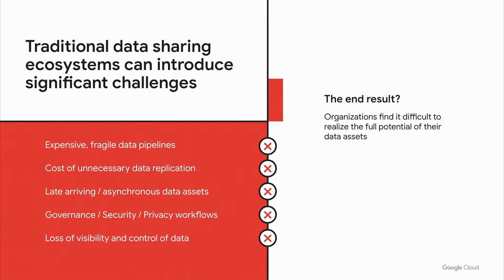Traditional data sharing techniques require batch data pipelines that extract data from databases stored in flat files, transfer them to customers where they're then ingested into another database. Not only are these pipelines expensive to run, all the changes required to the source data can cause them to break. Sharing flat files also results in multiple copies of that data, which in turn results in unnecessary costs, especially when you have multi-petabyte data sets. The time required for batch pipelines also means the data is already stale by the time it reaches the customer.